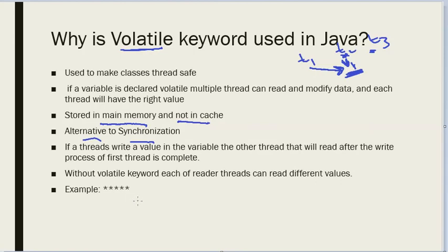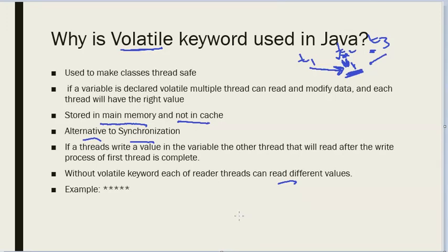Without the volatile keyword, each reader thread can read different values. For example, t2 might read a value of v1 before t1 wrote it, and t3 might read a value of v1 after t1 wrote it. This leads to inconsistencies in the program and ultimately in the end result. This covers the theory and an example of using the volatile keyword on variables — data types or objects.